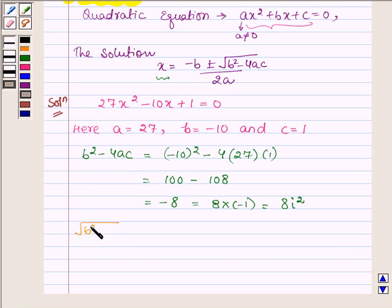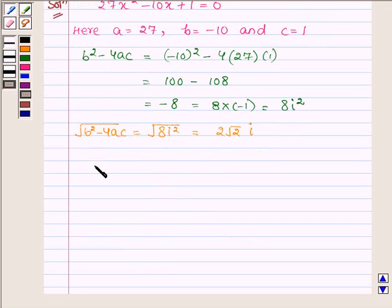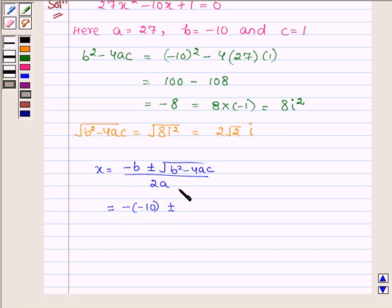Therefore √(b² - 4ac) = √(8 iota²) = 2√2 iota. Now let us find the solution x, which is given by (-B ± √(B² - 4ac))/2a. So we have -(-10) ± 2√2 iota / 2(27).